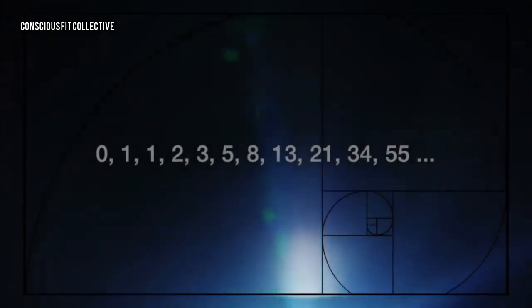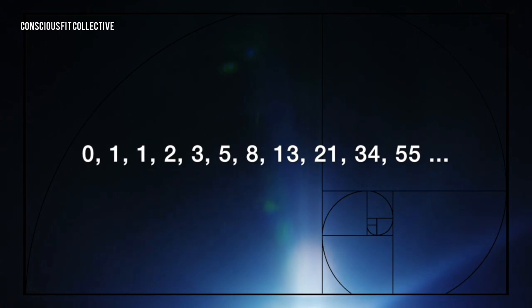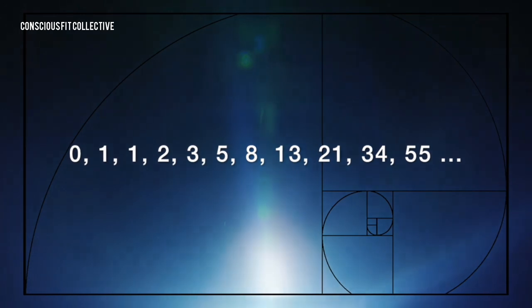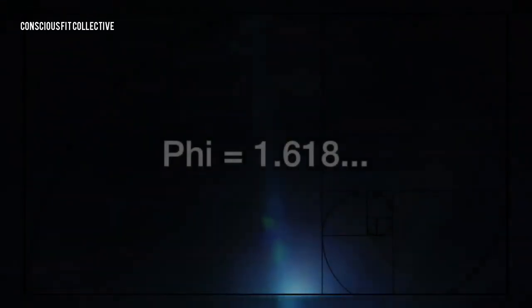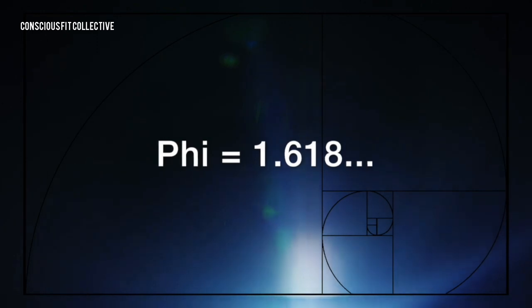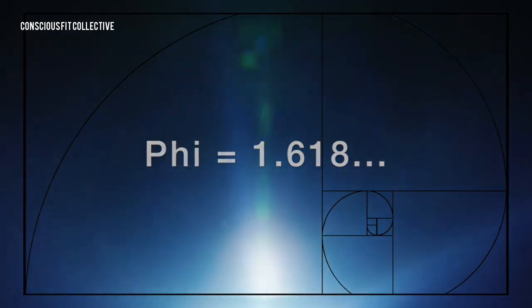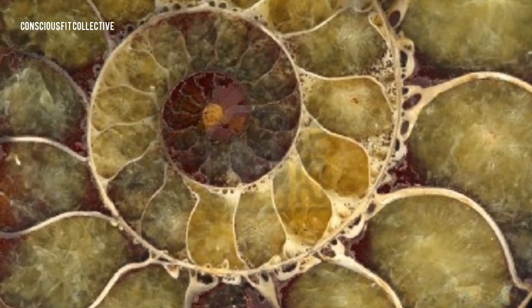The Fibonacci sequence starts as 0, 1, 1, 2, 3, 5, 8, 13, 21, 34, 55, and goes on forever. Each number is the sum of two numbers that precede it. Although it is a simple number pattern, it seems to be a built-in numbering system within the universe itself. The golden proportion can be found in the structure of many insect and animal bodies. A perfect example would be the Nautilus shell.